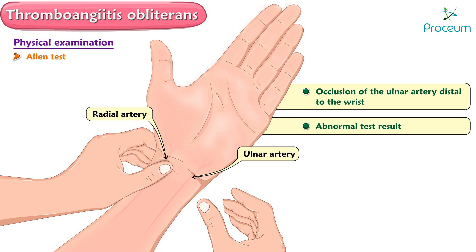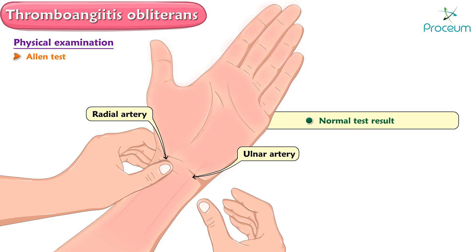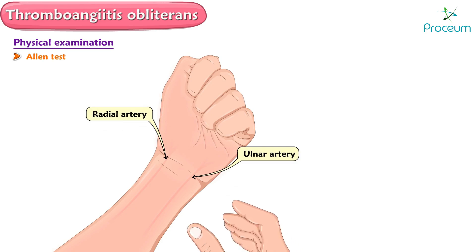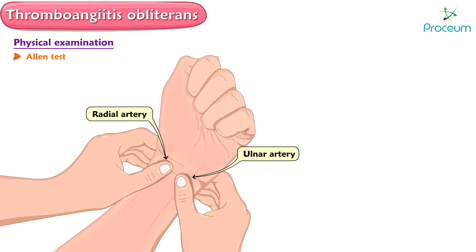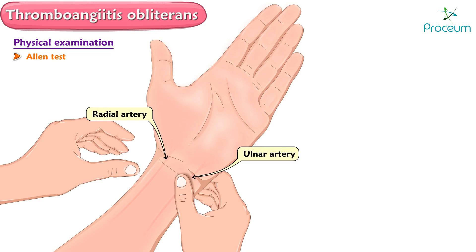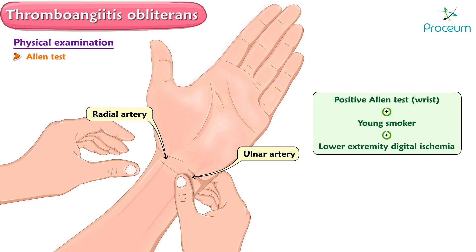If there is prompt return of color to the hand, it indicates a normal test result, and the test is repeated — this time releasing pressure on the radial artery while the ulnar artery remains compressed. A positive Allen test at the wrist in a young smoker with lower extremity digital ischemia is suggestive of thromboangiitis obliterans.